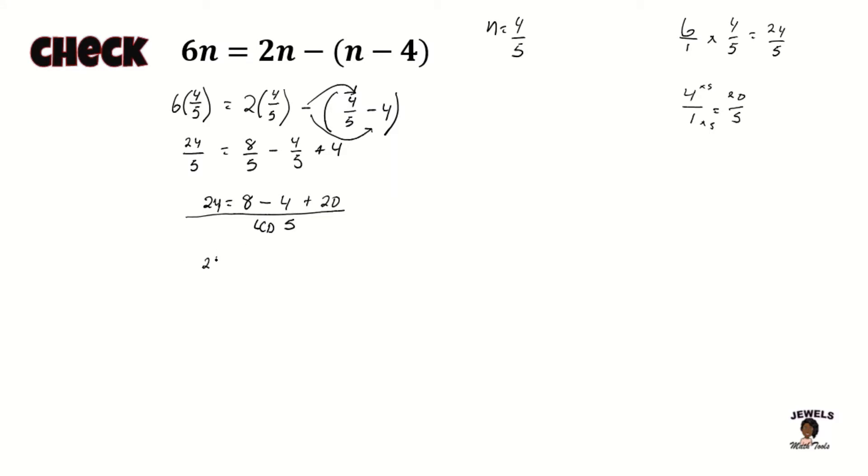So now that everything has the same LCD, we're going to just move our fraction and get rid of that denominator of 5. So now let's simplify our equation. So 8 minus 4 is 4, plus 20 will equal to 24.